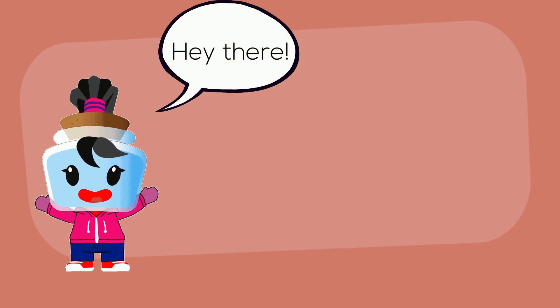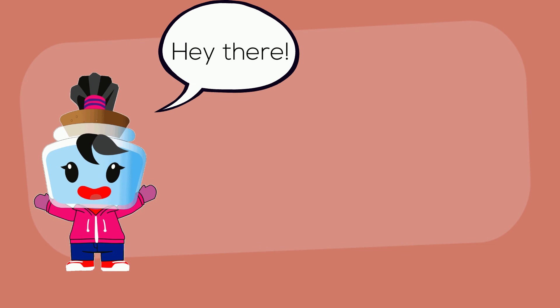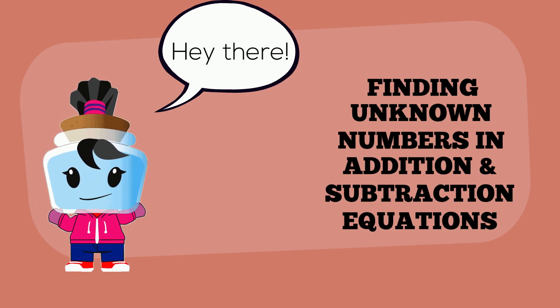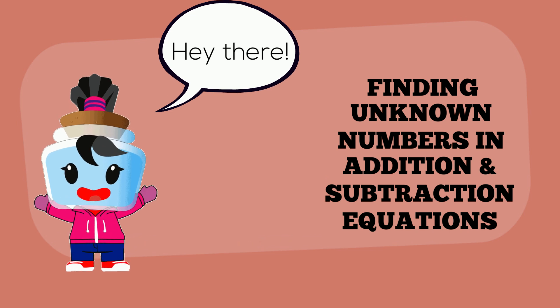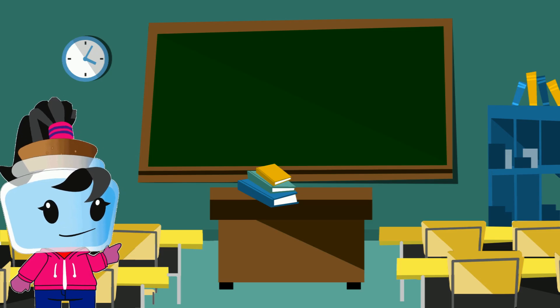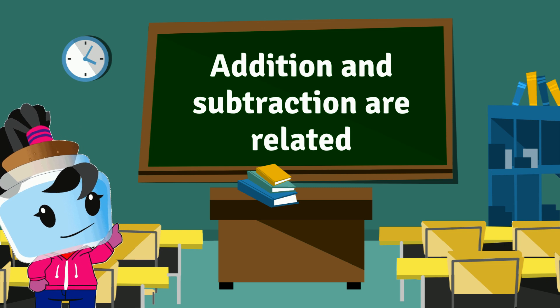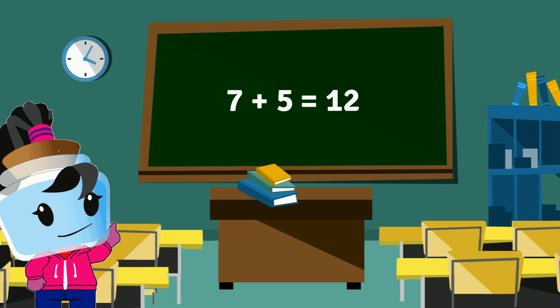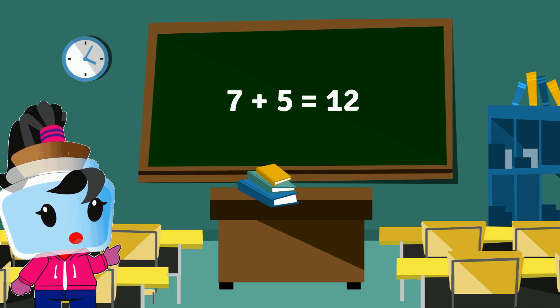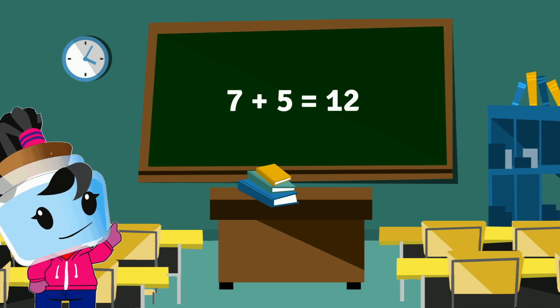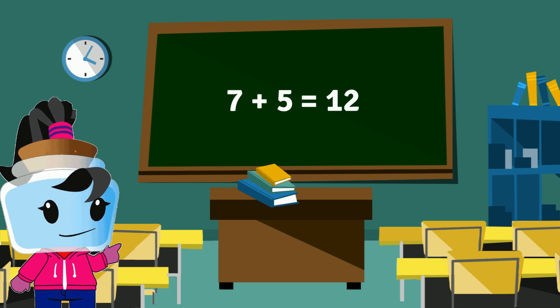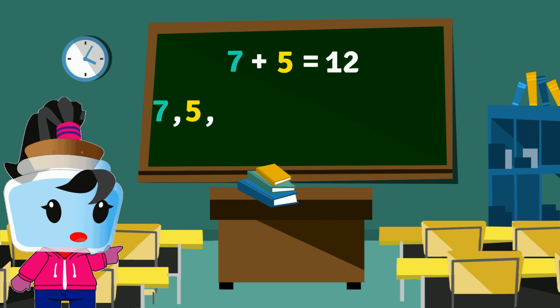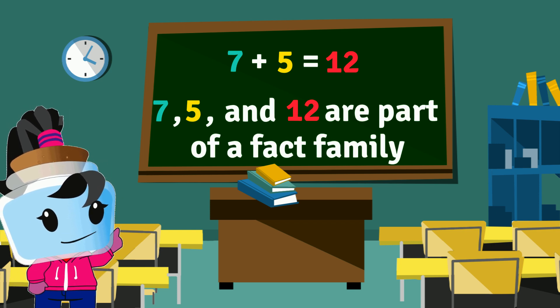Hey there! Today we'll practice finding the unknown number in an addition or subtraction equation. As previously discussed, addition and subtraction are related. Let's look at this equation: 7 plus 5 equals 12. The three numbers in this equation, 7, 5, and 12, are part of a fact family.